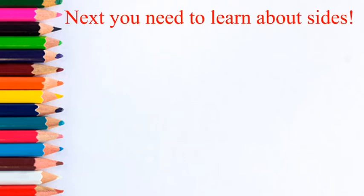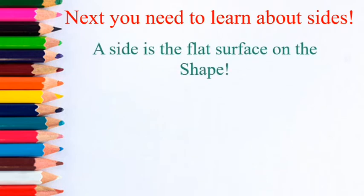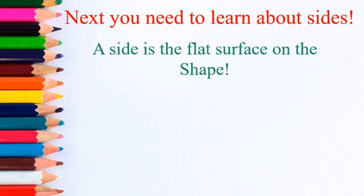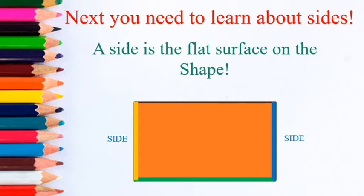Next, you need to learn about sides. A side is the flat surface on the shape. These are all flat surfaces on the shape — they are called sides.